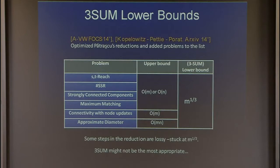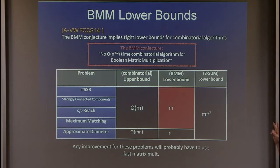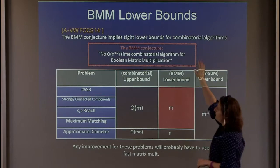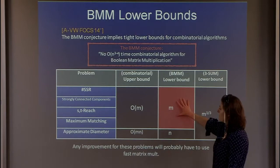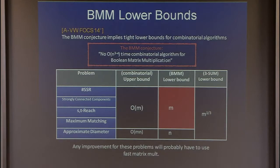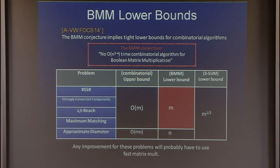Since 3SUM couldn't get us beyond M to the one-third, we considered the combinatorial Boolean matrix multiplication conjecture: there is no M to the 2.99 algorithm for Boolean matrix multiplication. If you assume this conjecture, then all these problems require omega of N time per update, if you don't use fast matrix multiplication. We're in a nice setting, except we lose something because of the 'combinatorial' qualifier.